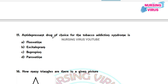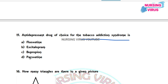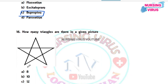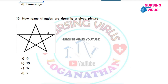Question 15: The antidepressant drug of choice for tobacco addiction syndrome is which of the following? The options are fluoxetine, escitalopram, bupropion, and paroxetine. The correct answer is bupropion.